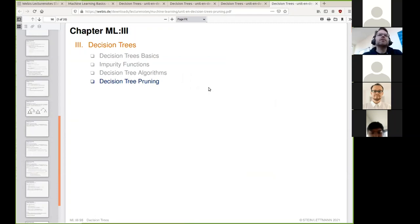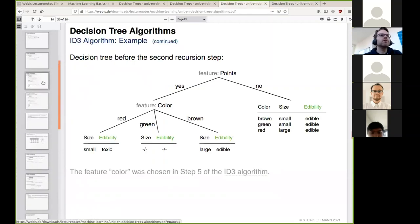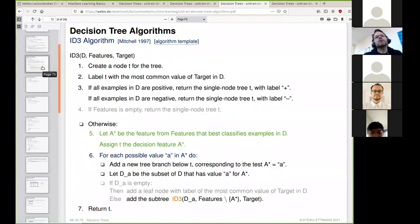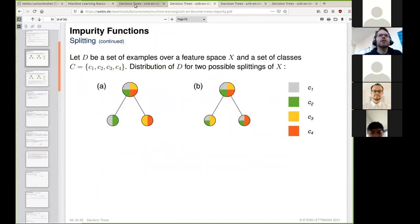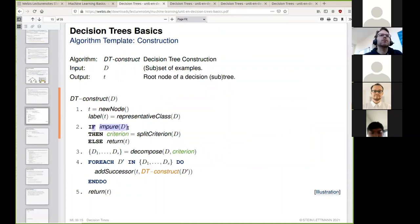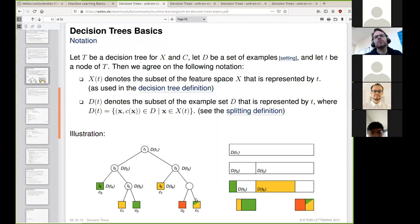Decision tree pruning refers to post-processing of a trained decision tree for regularization purposes. In the ID3 algorithm, we don't have a criterion that helps us stop early in the construction of the decision tree. The algorithm will try to figure out a splitting for as long as the nodes are impure.